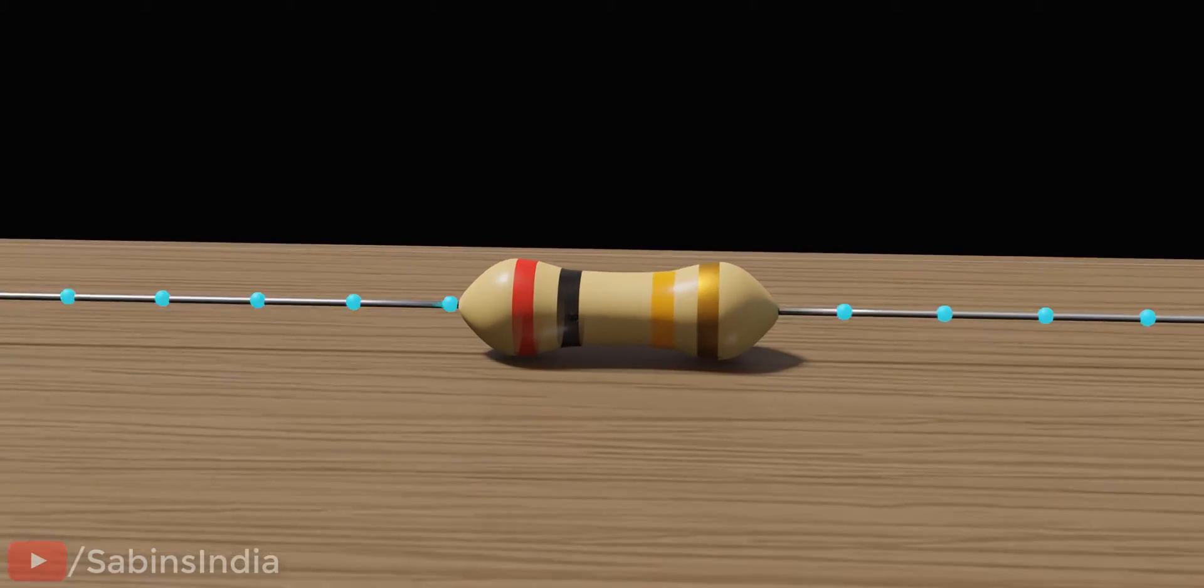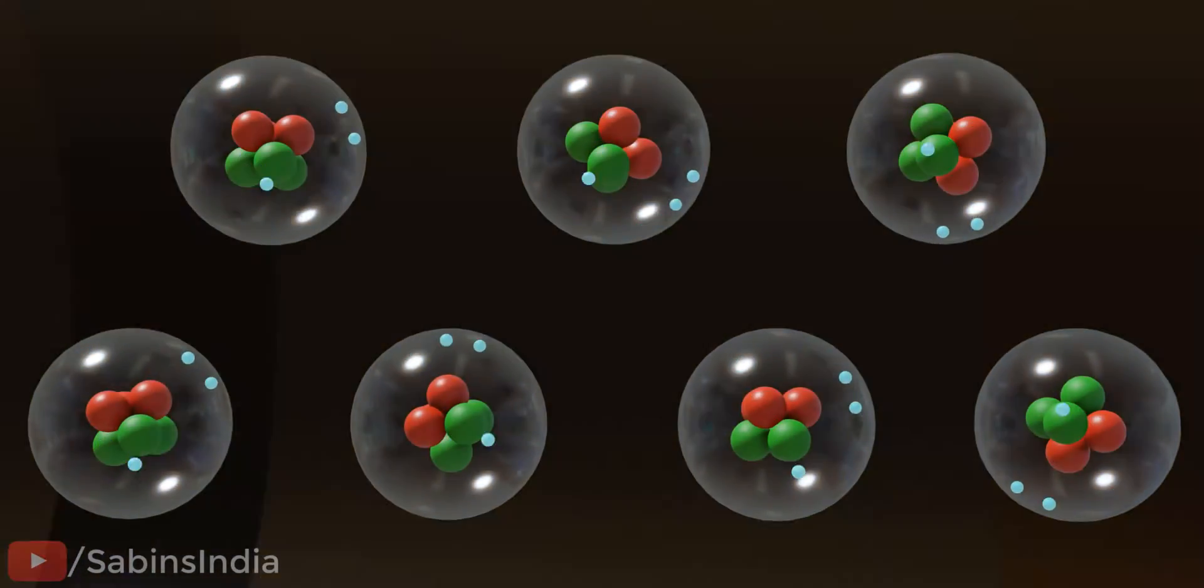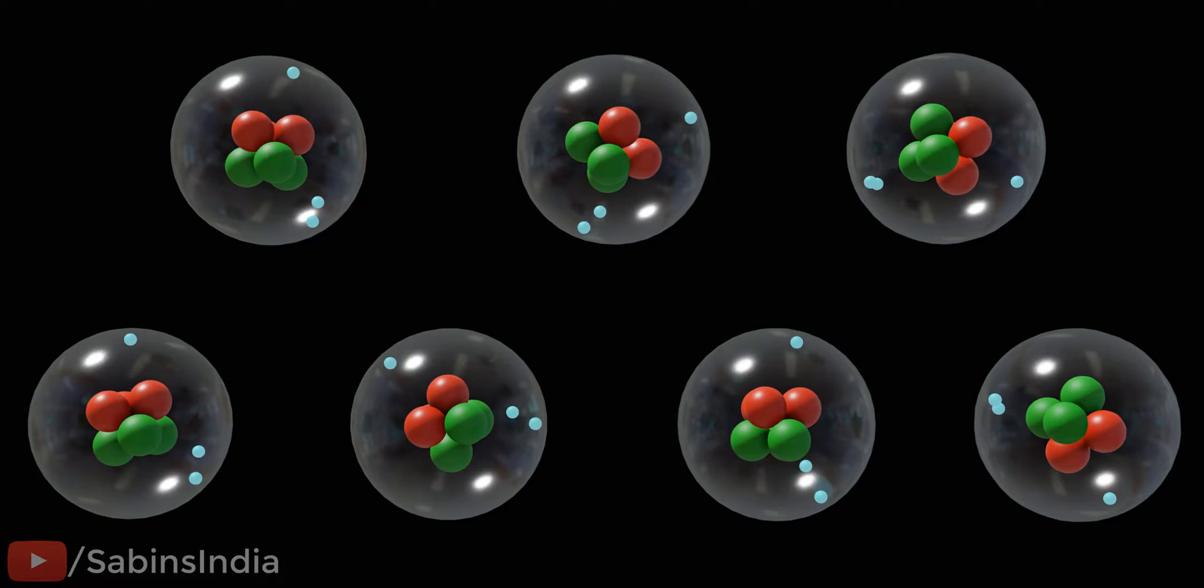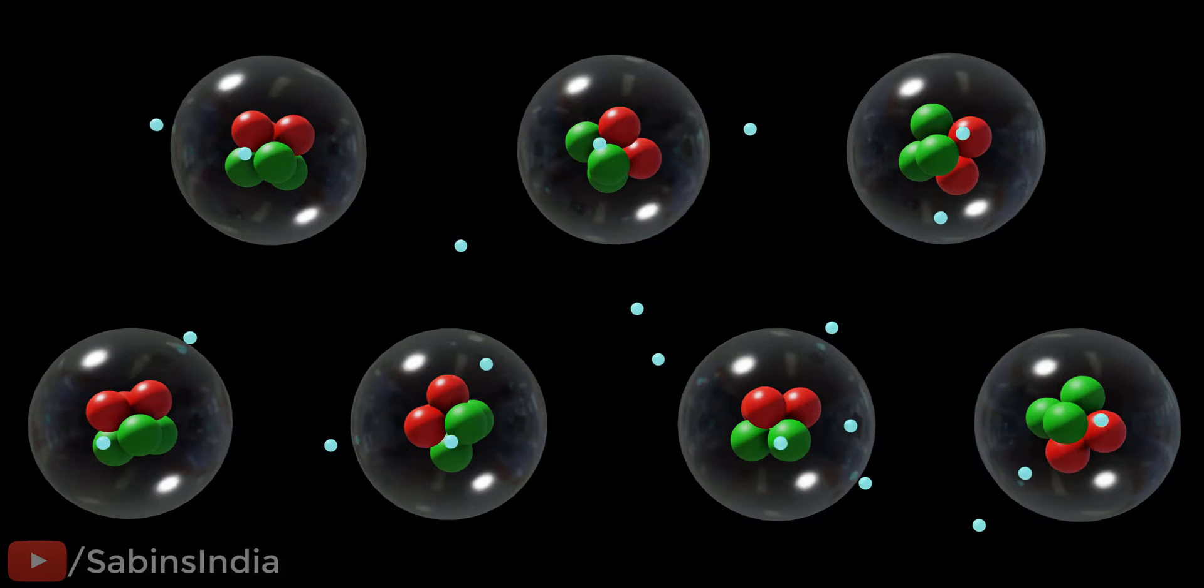We need to approach things at the atomic level to understand Ohm's law. An atom always has a few electrons around the nucleus. In a conductor, some of these electrons will be loosely bound and free to roam around, as shown.